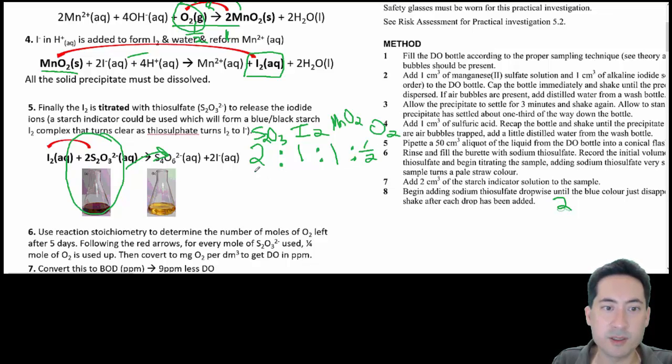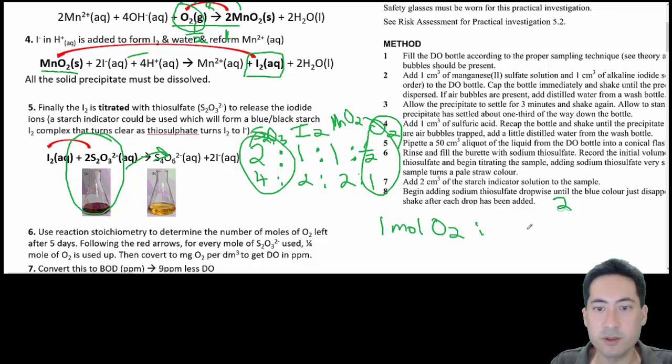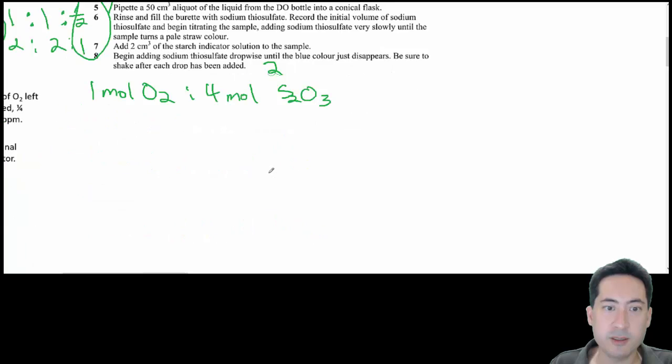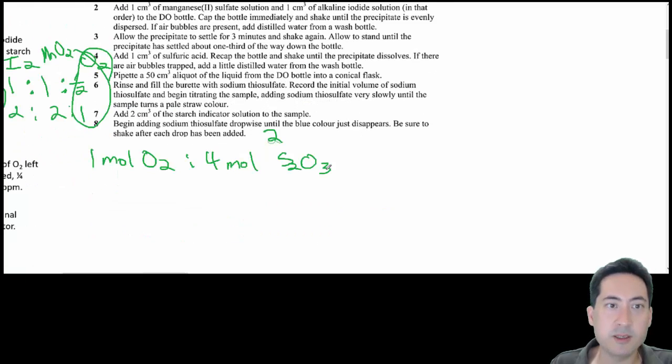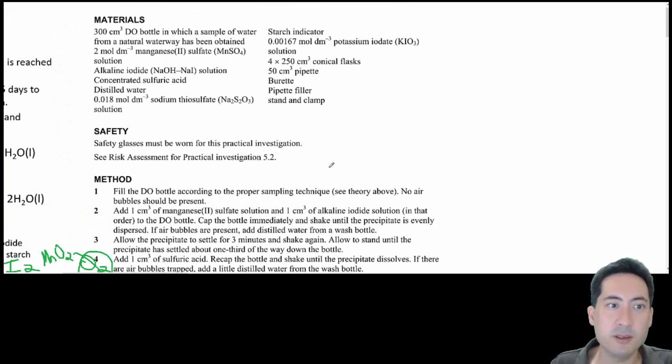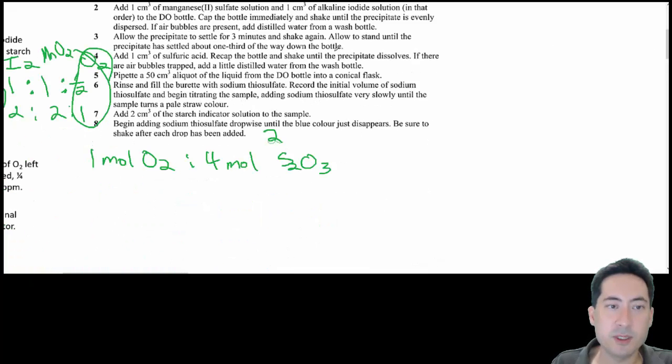We can't have fractions, so we'll times them all out by two. So what you're getting here is one mole of O2 is to four moles of thiosulfate. What we did here is we ended up using two mils for this reaction. So the first step is to work out how many moles that is.